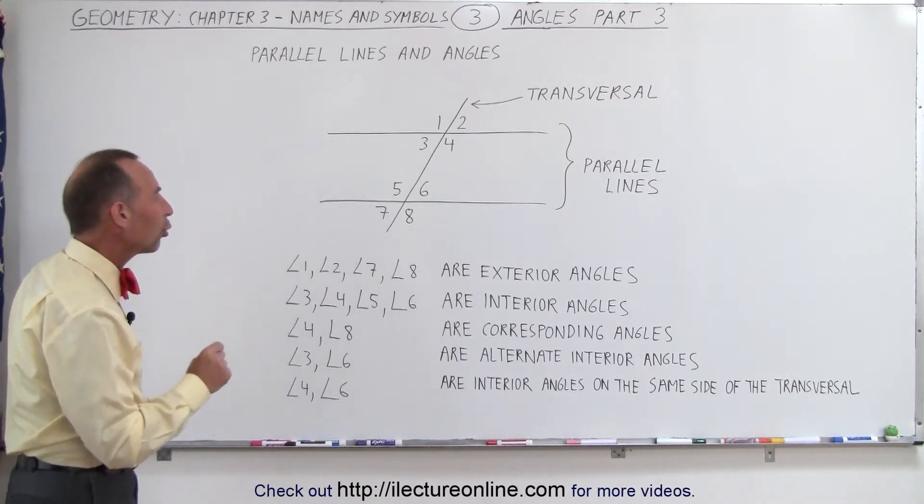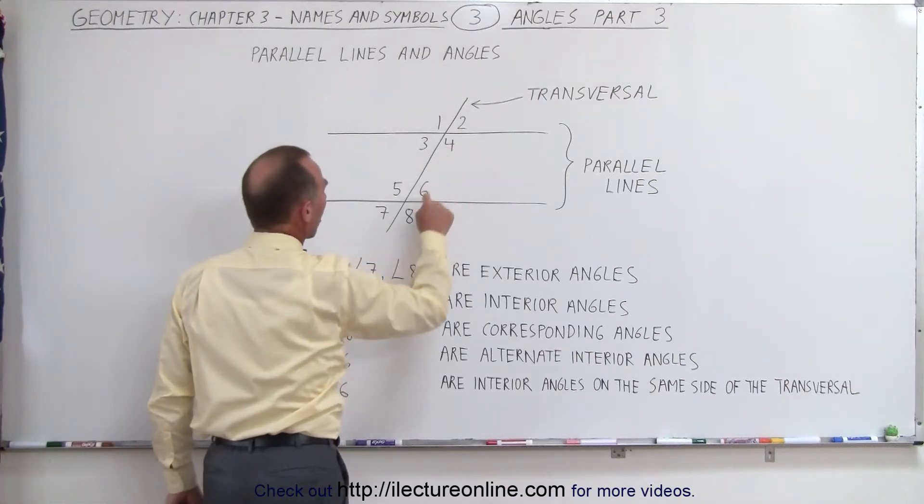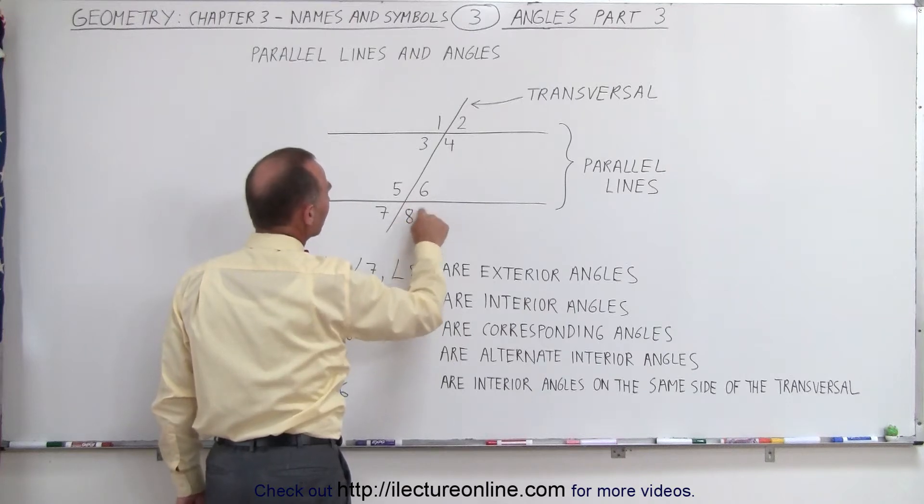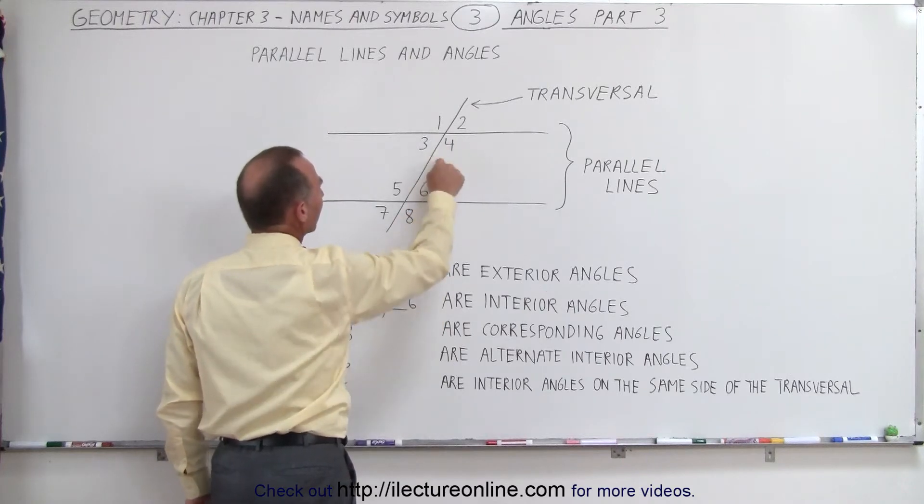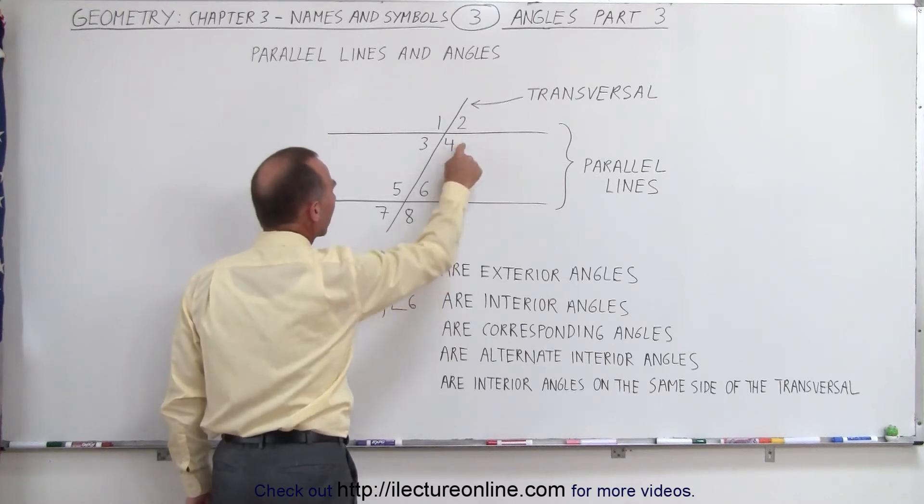We also have what we call corresponding angles. Number four, number eight—these two are corresponding angles. Notice that the angular size of eight must be exactly the same as the angular size of four. So four and eight are corresponding angles.